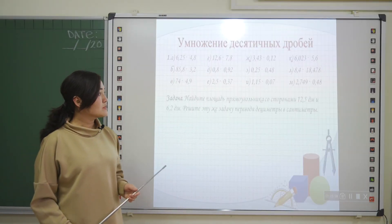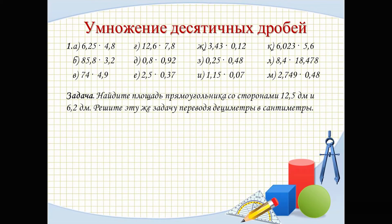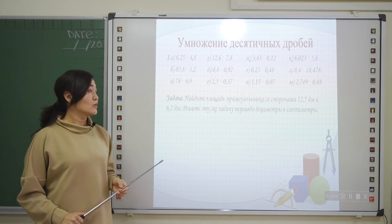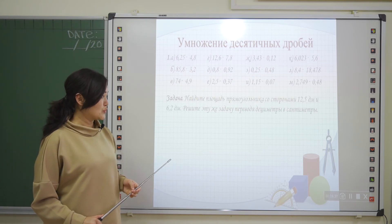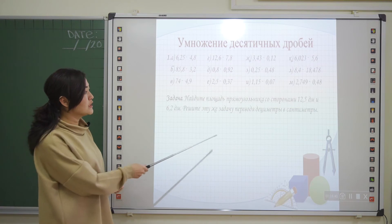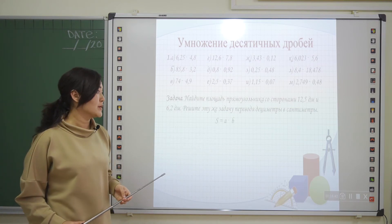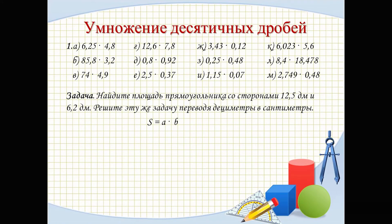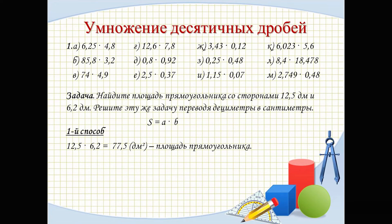Let's look at a problem. Find the area of a rectangle with sides 12.5 decimetres and 6.2 decimetres. Solve this problem also by converting decimetres to centimetres. Remember, to find the area of a rectangle we multiply the sides: S = a × b. Method 1: 12.5 × 6.2 = 77.5 square decimetres — that is the area.